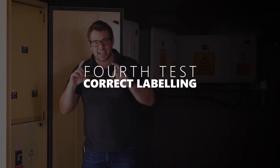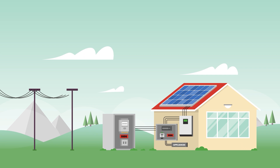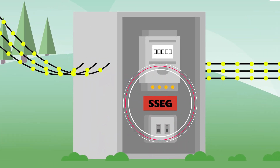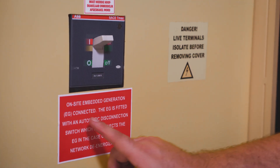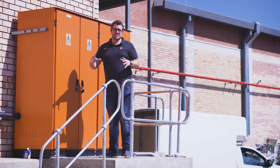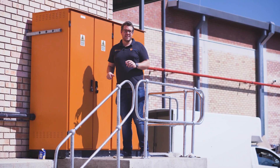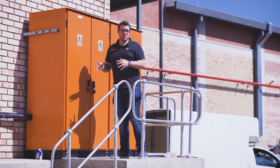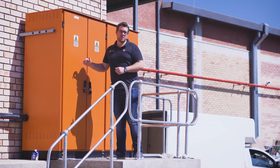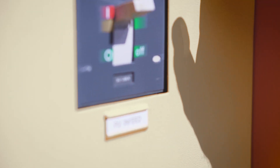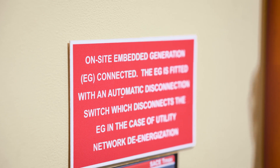The final check is to verify that the correct labels are installed. Labels inform the customer, installer, and future users that there is an embedded generator installed on the premises. The label must be at the SSEG system itself and ideally also at the kiosk or point of supply. At the main DB board or point of supply we can also confirm a label is present, making it easier for the utility and installers to be aware of the embedded generator. At the circuit breaker we can see the PV infeed label indicating an embedded generator is installed on the premises.